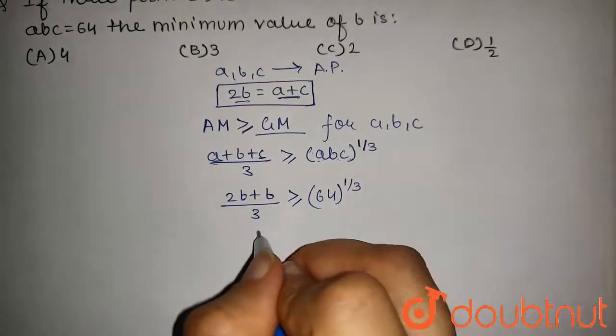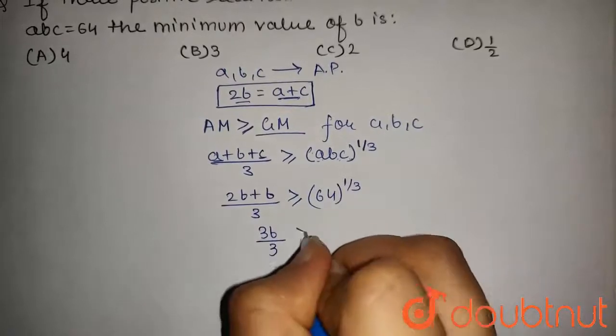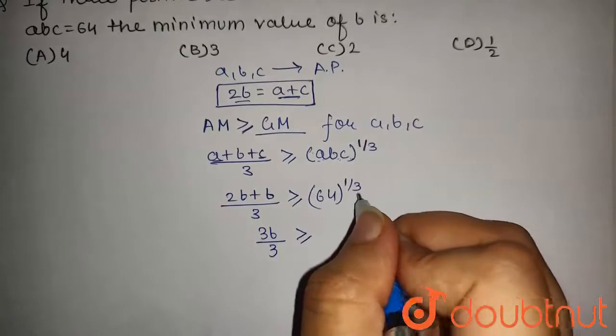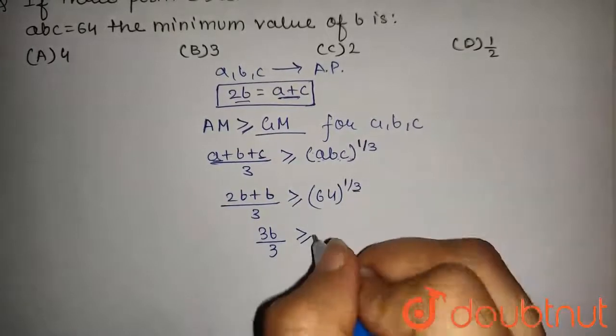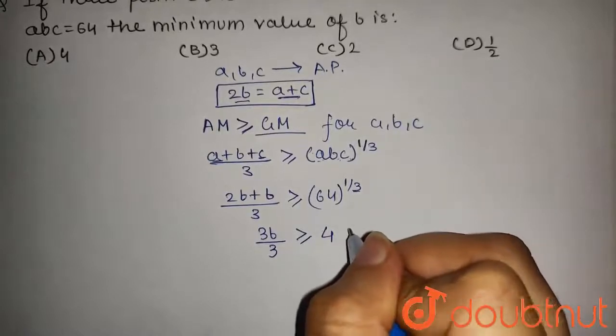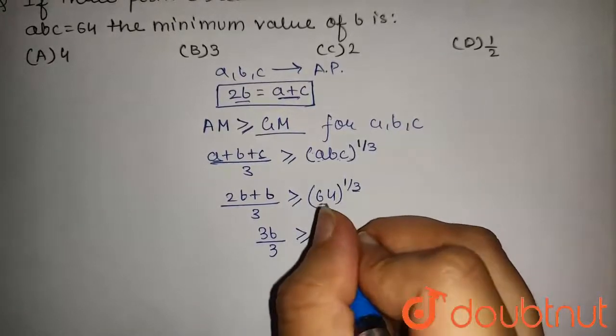Now this will be 3B upon 3 will be greater than or equal to 64 to the power 1 by 3. So it will be 4 as 4 cube is equal to 64.